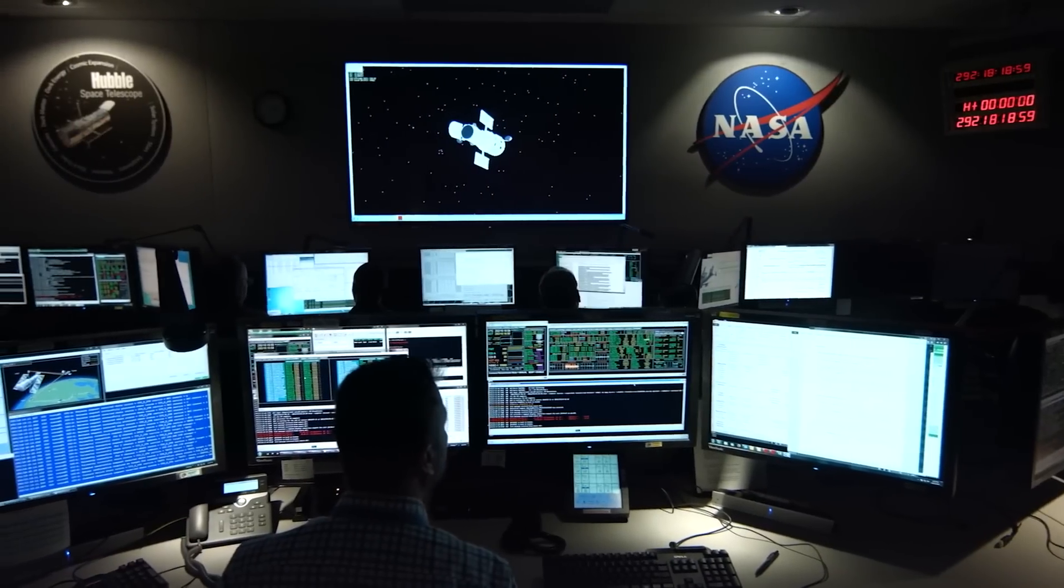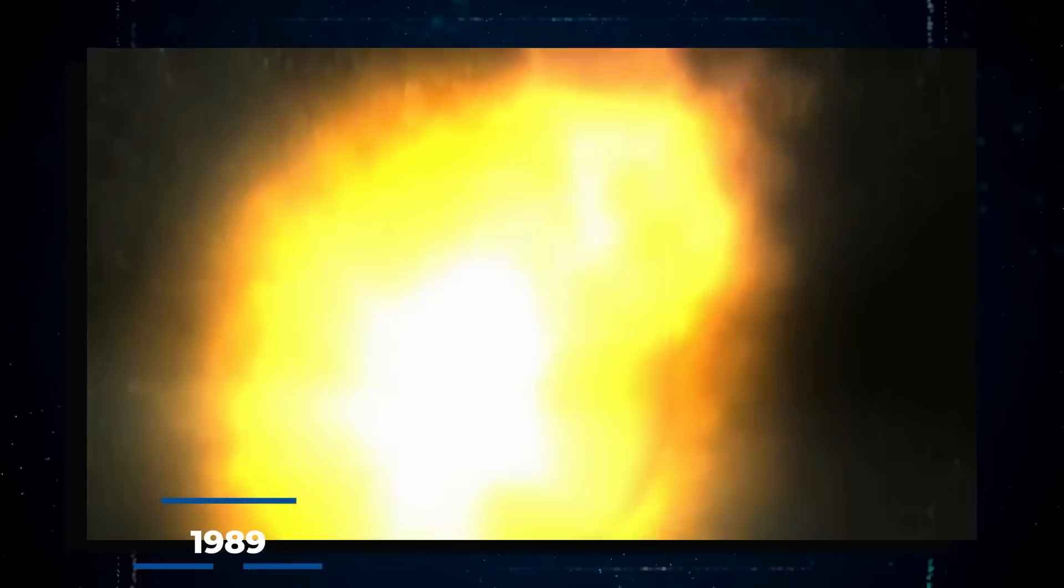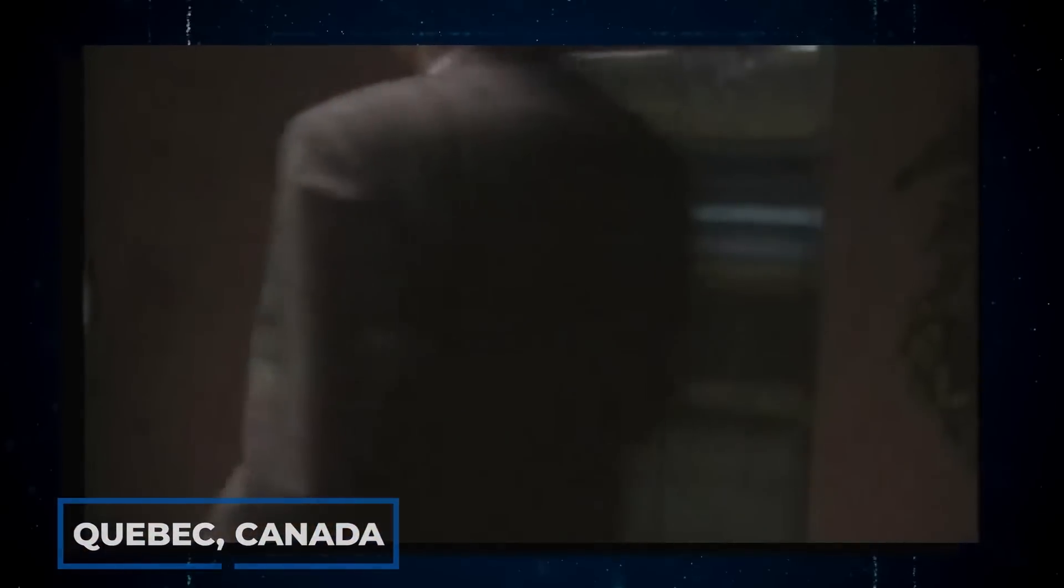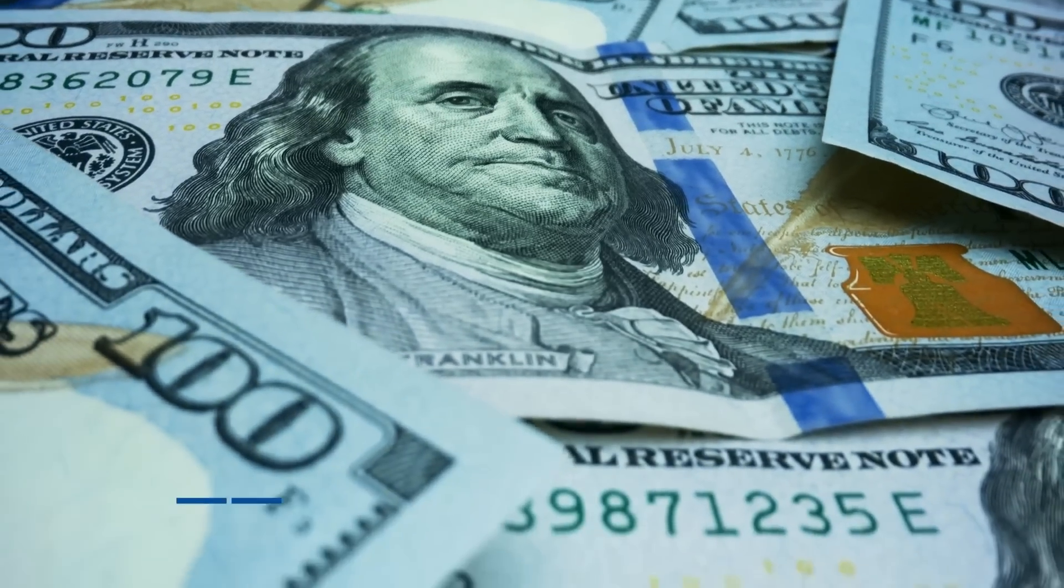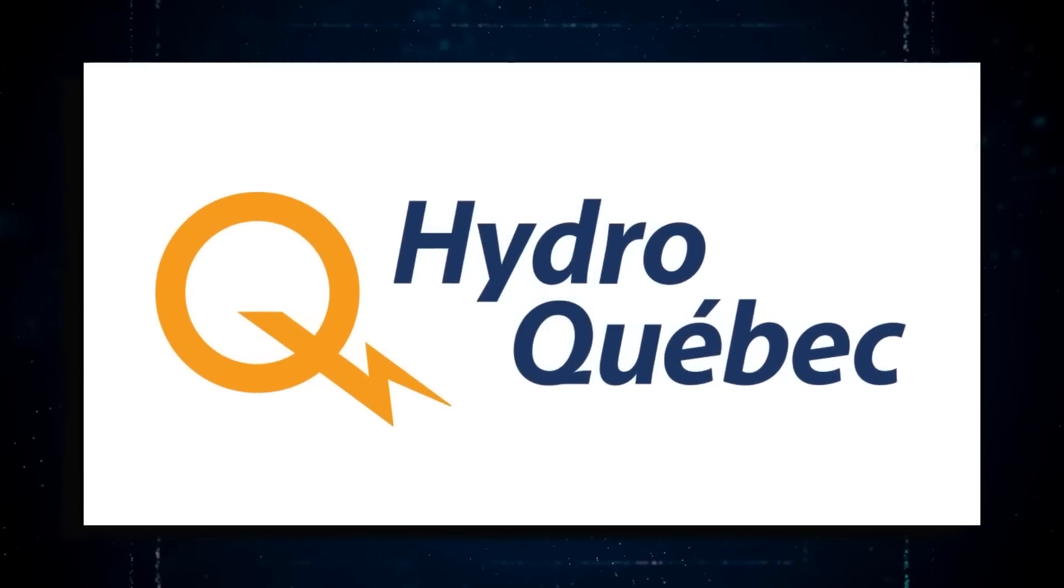In another instance, NASA reported that a CME accompanied a solar flare that hit Earth in 1989, leading to a 12-hour electrical blackout across the entire province of Quebec, Canada. This event resulted in at least $10 million in damages to Quebec's utility company Hydro-Quebec.